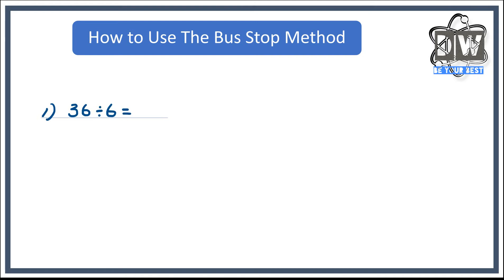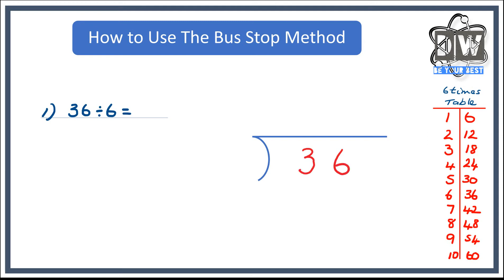36 divided by 6. Some of you might be thinking this is easy, but we're just going through the process. All we do is we put 36 inside the bus stop and we put 6 outside the bus stop. And what we're going to do is down the right hand side, we're going to draw out the six times table.